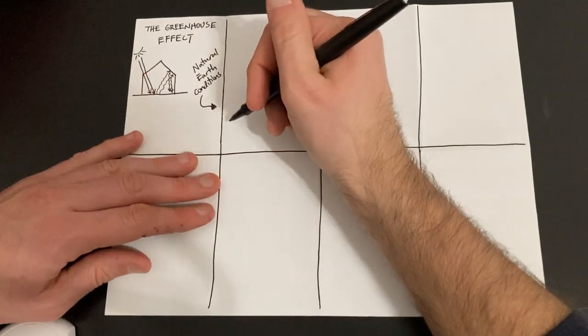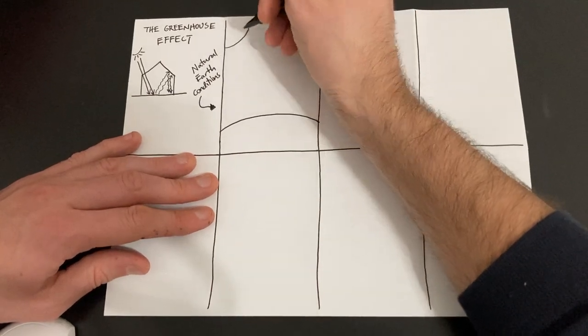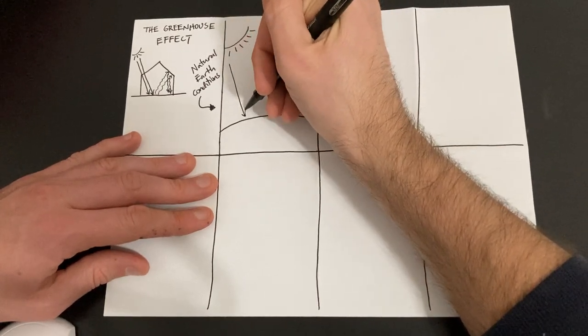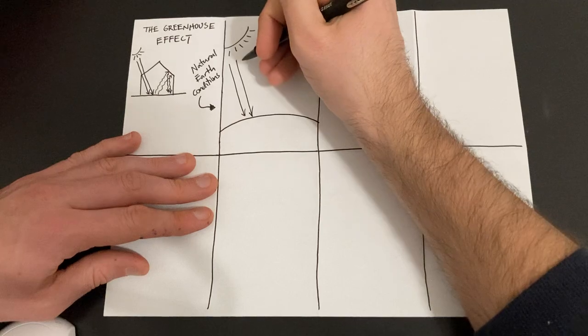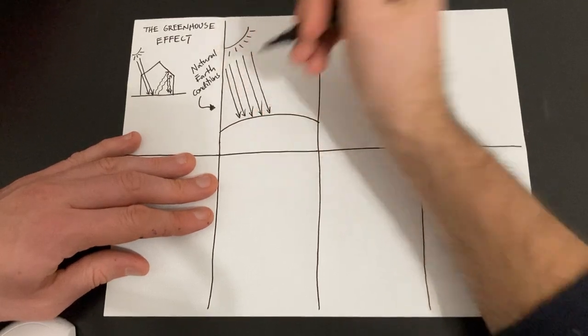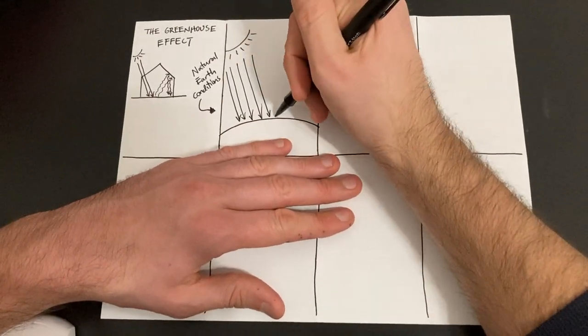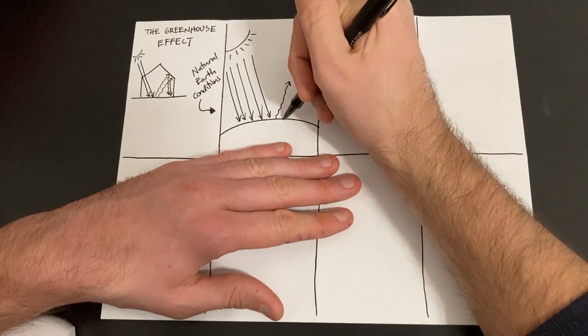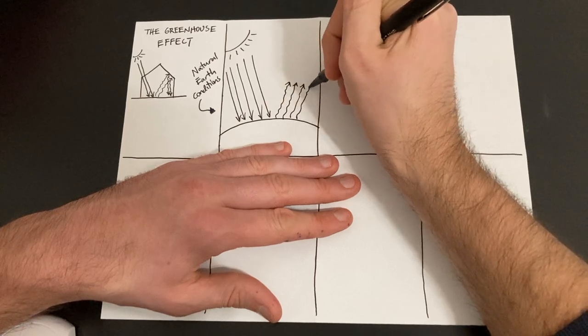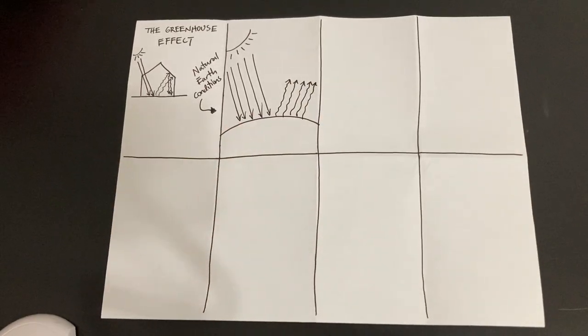So let's just first start off with drawing our earth surface. And I'm going to draw the sun here and I'm going to draw five light rays coming down. One, two, three, four, five. And what's going to happen is just like in a greenhouse, some of that light is going to get re-emitted as infrared light. So I'm going to draw five light rays being re-emitted back into space.